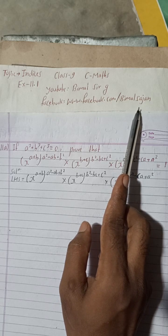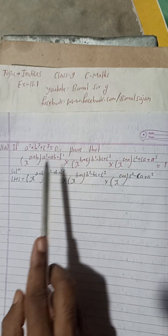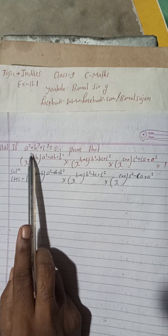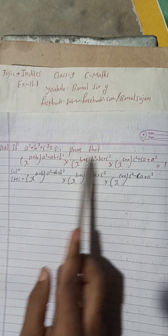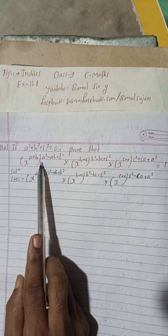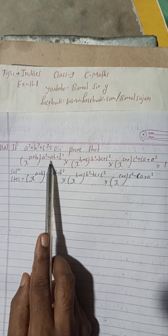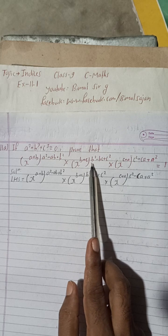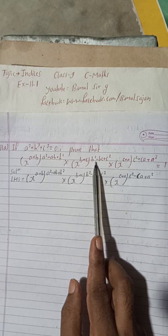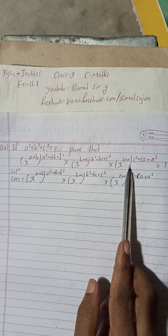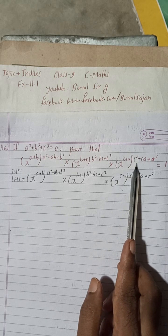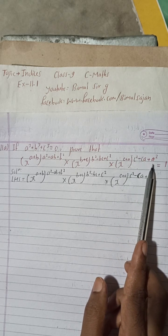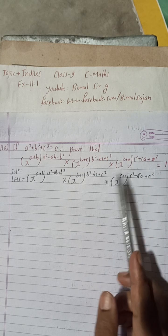So let's begin the question 11a. If a³+b³+c³ is equal to zero, prove that x^(a+b)^(a²-ab+b²) × x^(b+c)^(b²-bc+c²) × x^(c+a)^(c²-ca+a²) is equal to 1. We have to prove.